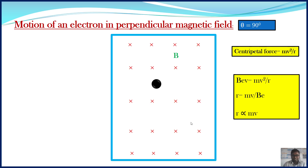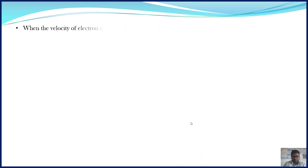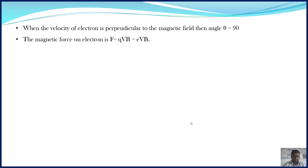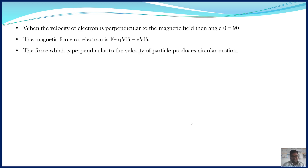Now let us discuss the mathematics behind the motion of an electron in a perpendicular magnetic field. When the velocity of an electron is perpendicular to the magnetic field, θ equals 90°, and the force acting on the electron is eVB. Whenever the velocity and the force are perpendicular to each other, the particle performs circular motion. And whenever force and velocity are perpendicular, the work done by the force is zero, so there will be no change in the kinetic energy of the particle.